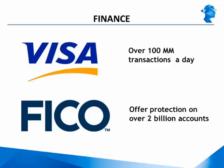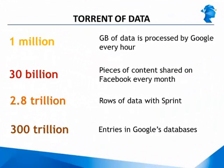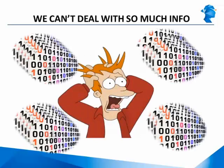Data is everywhere. Google is processing 1 million gigabytes of data every hour. On Facebook, people are sharing 30 billion pieces of content every month. Sprint has 2.8 trillion rows of data, and Google's databases have over 300 billion entries. When confronted with this vast amount of data, we can no longer rely on our minds to assimilate all the information and generate insights from it. The human mind is simply not designed to deal with so much information.